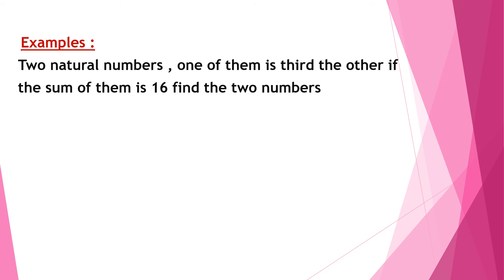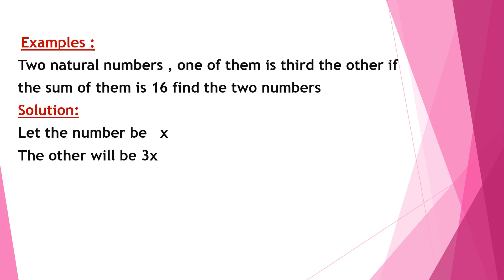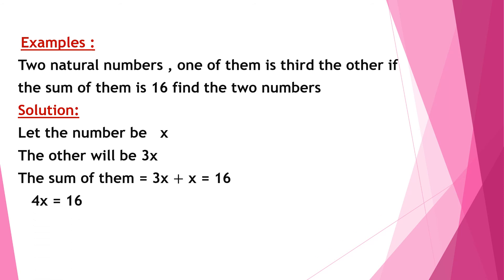First example: two natural numbers where one is three times the other, and their sum is 16. Find the two numbers. Let the first number be x, and the second number be 3x. Since their sum is 16: 3x plus x equals 16, so 4x equals 16. Dividing both sides by 4 gives x equals 4. So the first number is 4 and the second is 12. We can verify: 4 plus 12 equals 16, and 4 is one third of 12.